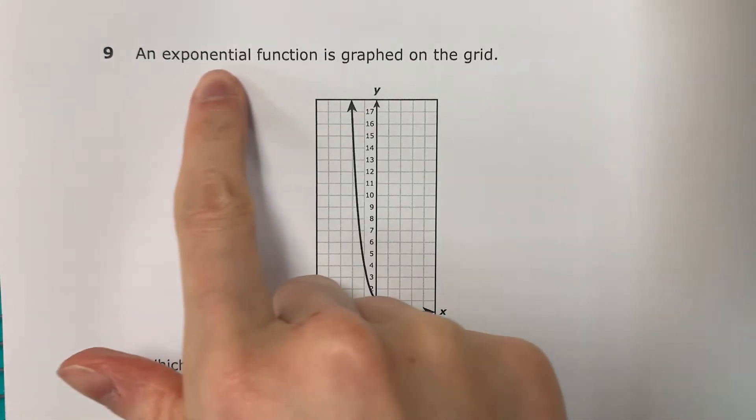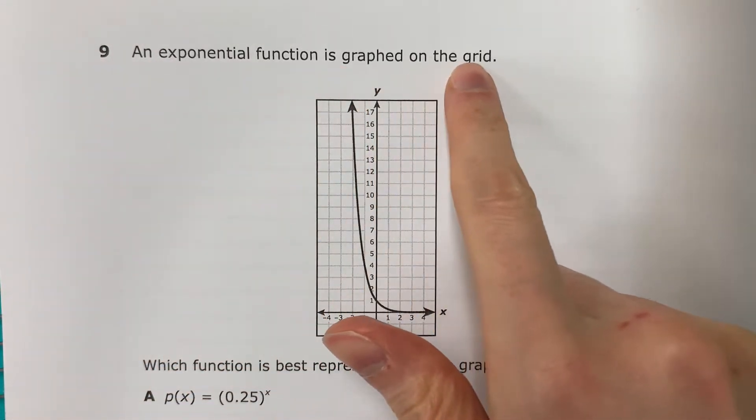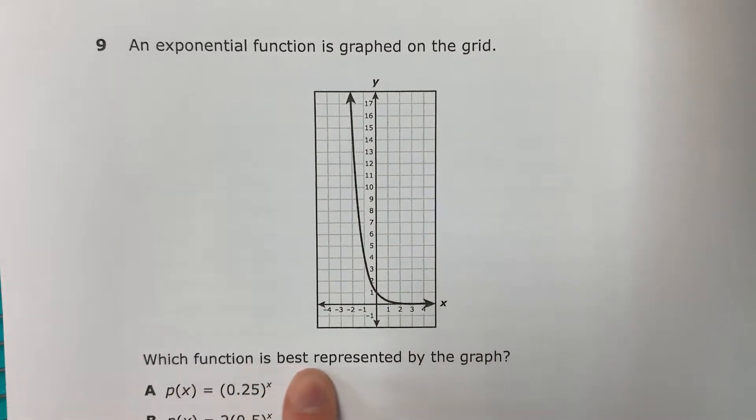Question 9. An exponential function is graphed on the grid. Which function is best represented by the graph?